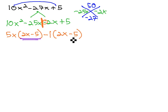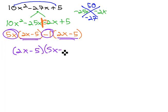We see the matching binomial GCF of 2x minus 5, and then 5x minus 1 becomes our remaining factor.